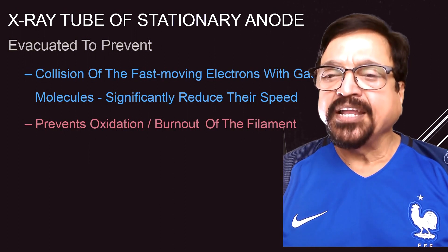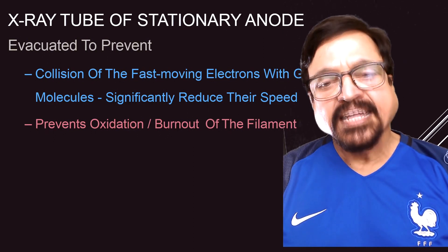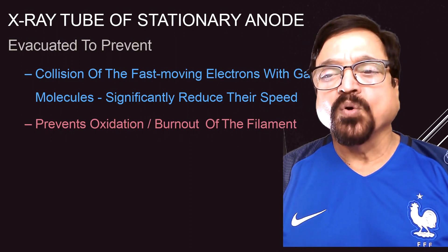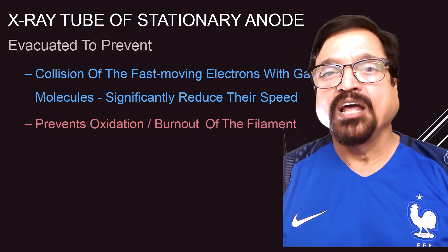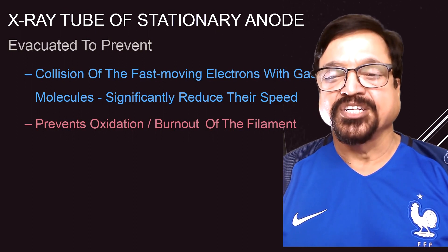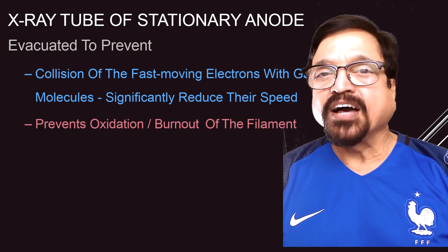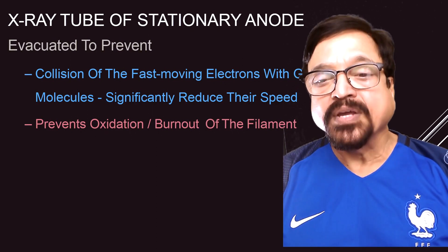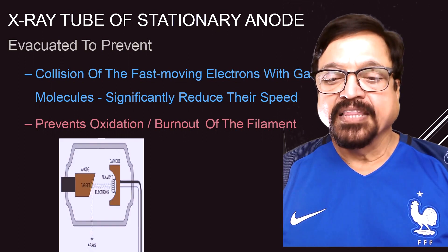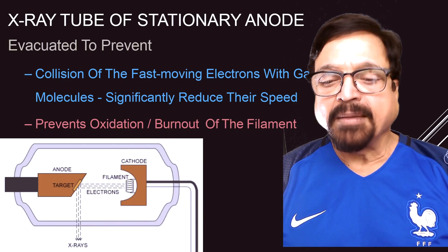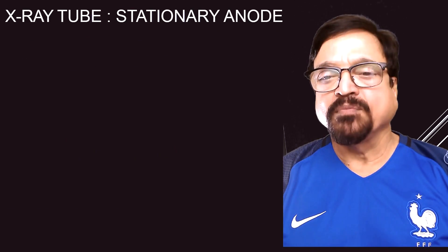The X-ray tube of the stationary anode is basically an evacuated glass envelope or glass tube. This is because if there is gas, its molecules will collide against the fast-moving electrons. Also, if there is air, the oxygen present would cause oxidation or burning of the internal structures. Therefore it must be a glass envelope that is totally evacuated. There will be no hindrance to the fast-moving electrons since there is no gas, and they will have steady acceleration with no reduction in speed. You can see the target cathode and filament from where the electrons are liberated and bombard the target to produce X-rays.